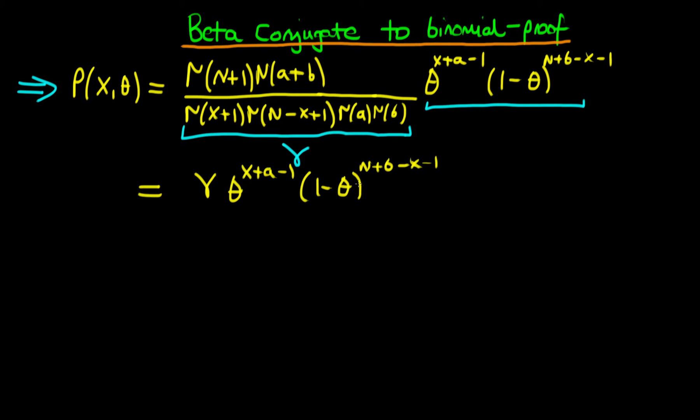And then we note that this is very much like a beta distribution that has a new parameter a, which I'm going to call a prime, which is equal to x plus a. And it's got a new value of b, which is equal to n plus b minus x. So but for the normalizing expression which we have in front of it, it would actually be that particular beta distribution. But we can make it equal to that beta distribution if we multiply it through by that normalizing constant.